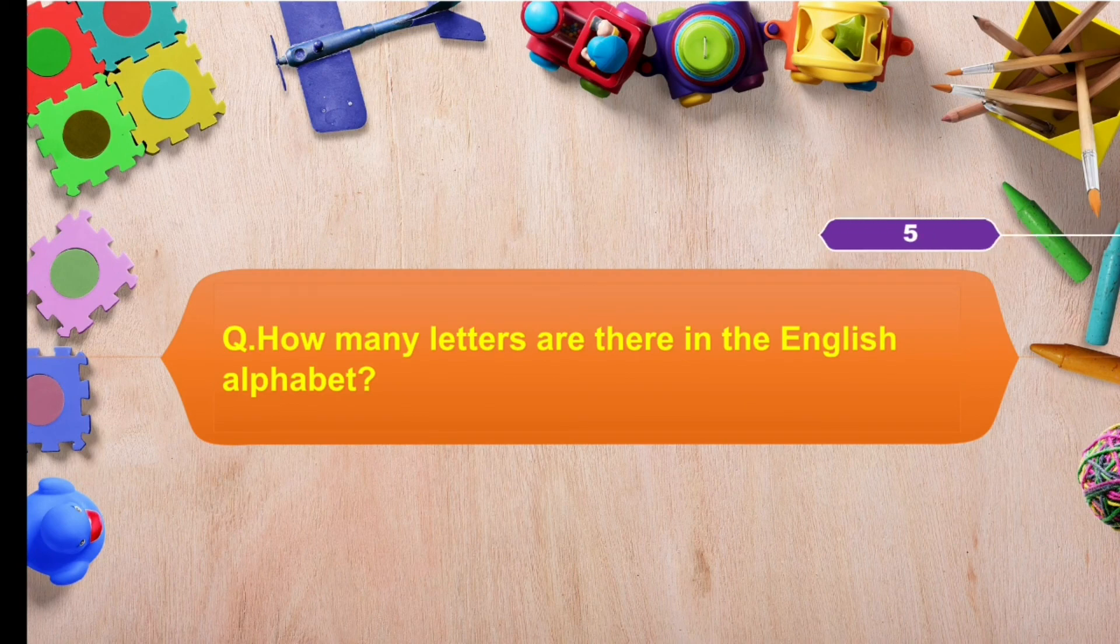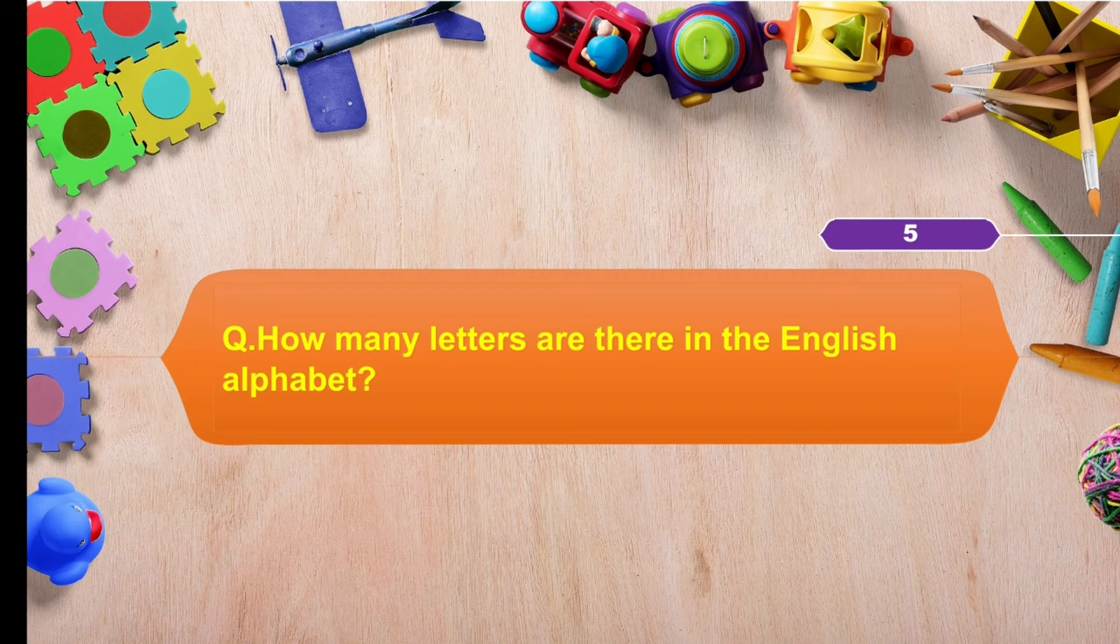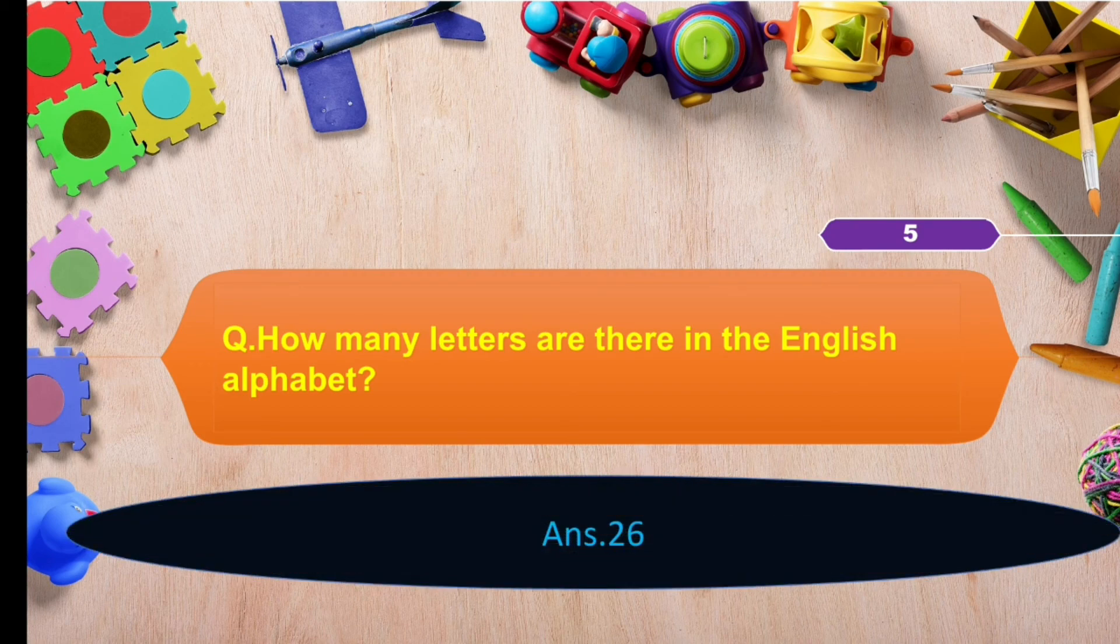How many letters are there in the English alphabet? And the answer is 26. Next.